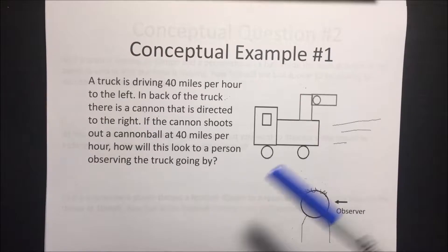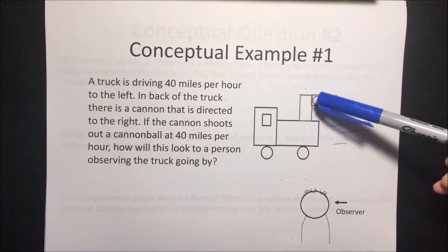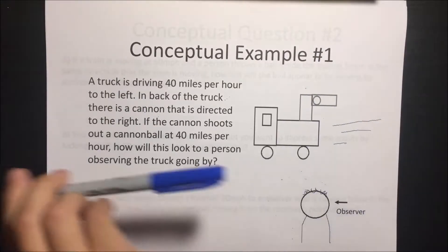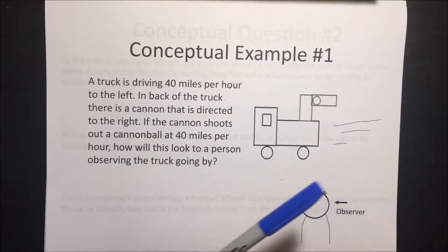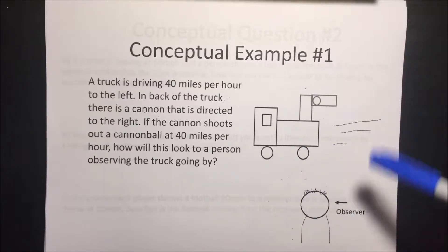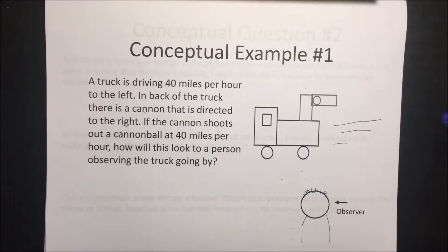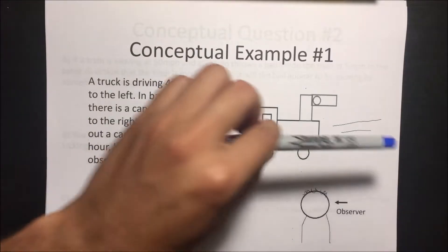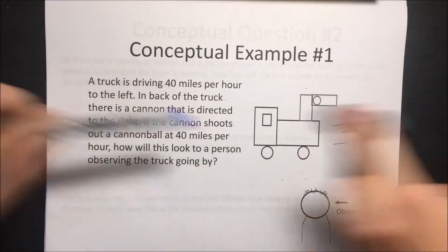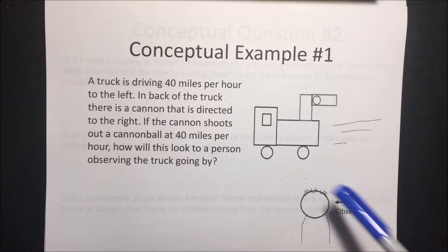Let's look at this problem. A truck is driving 40 miles per hour to the left. In the back of the truck there is a cannon directed to the right. If the cannon shoots out a cannonball at 40 miles per hour, how will this look to a person observing the truck going by? We have your truck going 40 miles per hour and a cannonball going out that way at 40 miles per hour. We want to know how it's going to look from an objective point of view.